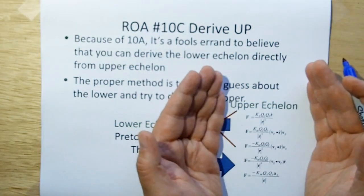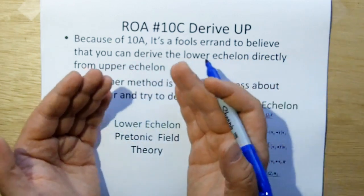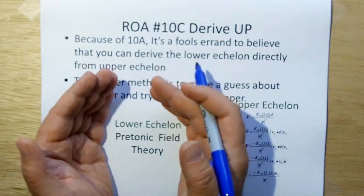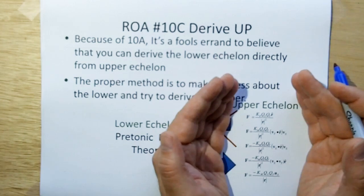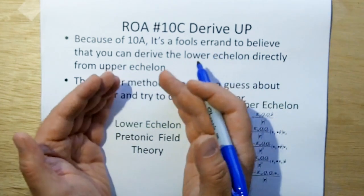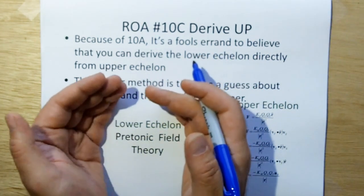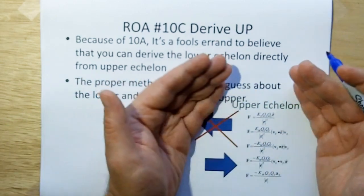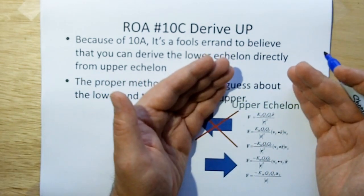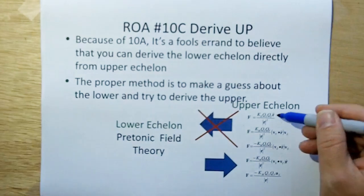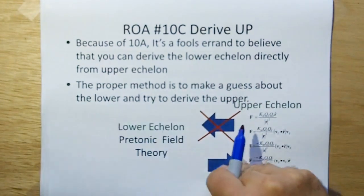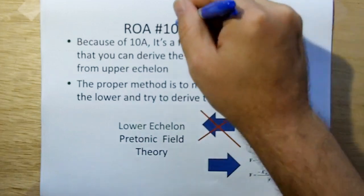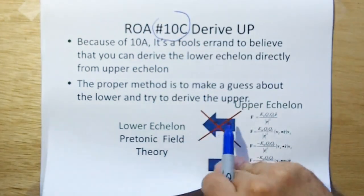And new electromagnetism is the upper echelon. And I'll show you when we develop the preton fields, the pretonic fields are not going to look anything like the new electromagnetism fields. But the pretonic fields derived will generate the effects we see at the higher echelon. But we should not assume that we're going to derive down. So don't assume you can derive down, but you can derive up. That is rule of acquisition 10c.